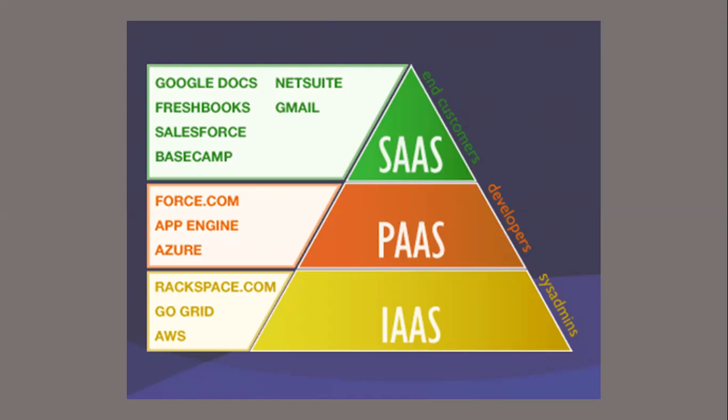These are examples of all three services. On the right-hand side you can see the clients or users who use that service. SaaS is used by end users like us — we use Gmail, Google Docs, Basecamp, etc. PaaS is used by developers; examples are Force.com, App Engine, and Azure. And IaaS is used by system administrators; examples are Rackspace.com, GoGrid, and AWS.